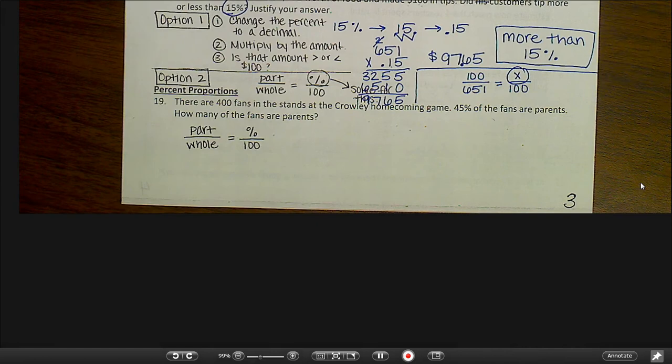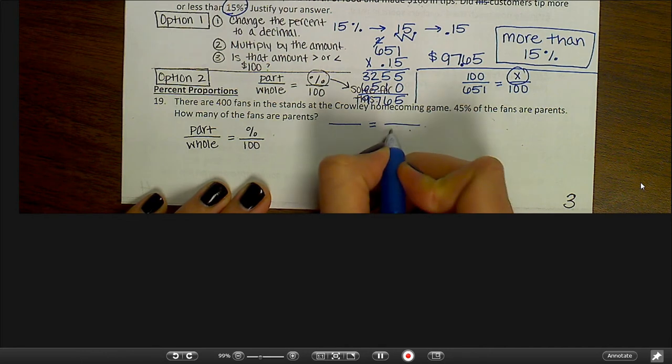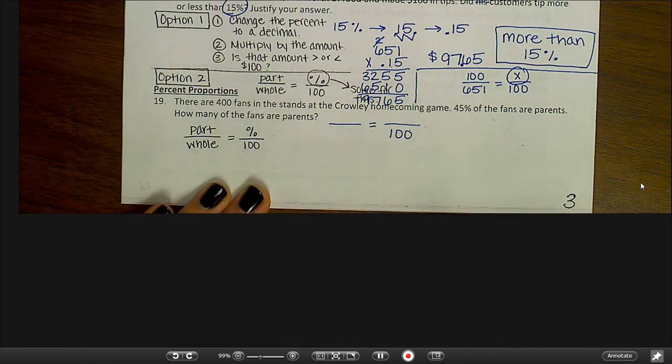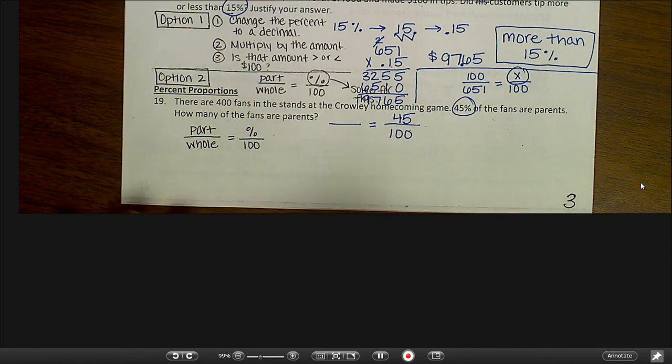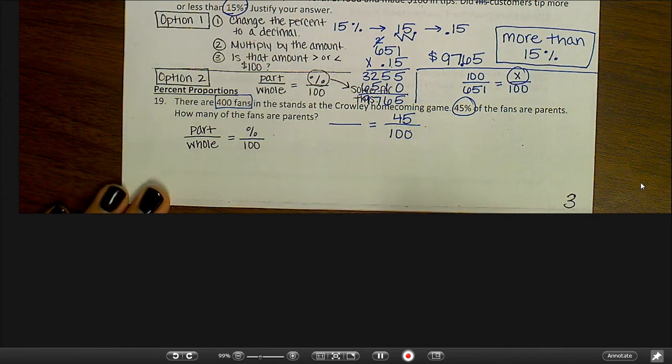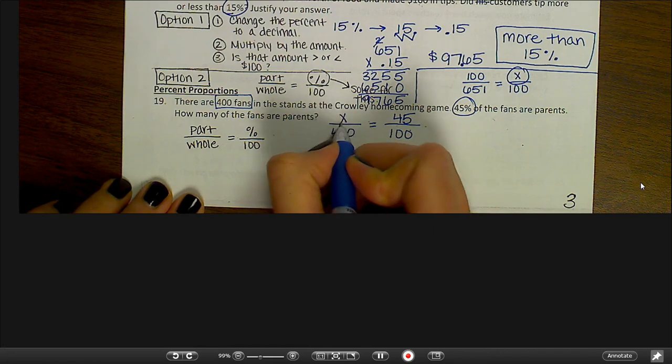The next part of your test is percent proportions. Number 19. There are 400 fans in the stands at the Crowley homecoming game. 45% of the fans are parents. How many of the fans are parents? So, part over whole equals percent over 100. Another way to say that is is over of equals percent over 100. So let's set up our problem here. I know that 100 always goes here. And my percent goes up here. And I know 45%. So I'm filling in what I know. 400 fans. Is that the part or the whole? Well, I know that's the whole because there are 400 total fans. And only a part of those are parents.